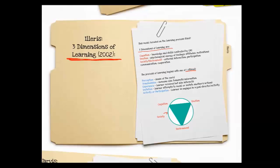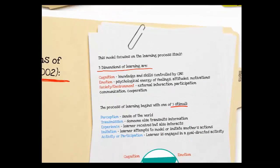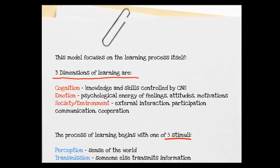Ilaris proposed three dimensions of learning, and this model focuses on the learning process itself. These dimensions are cognition, which refers to our knowledge and skills; emotion, which is the psychological energy of our feelings, our motivations, and attitudes; and environment and society — how do we participate in and interact with our environment.